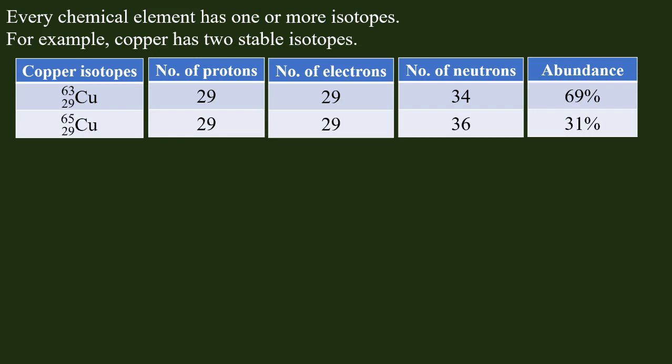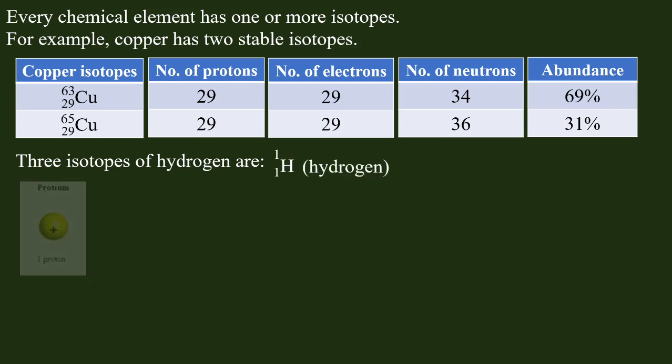There are 3 isotopes of hydrogen. The first is 1H1, which is hydrogen, and it contains one proton. You can see the two questions from the nucleus.